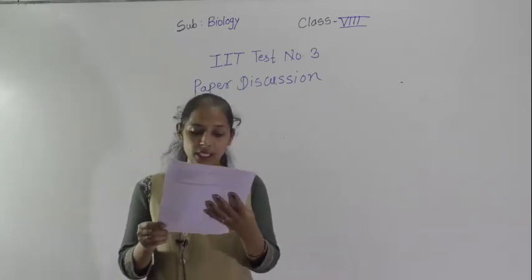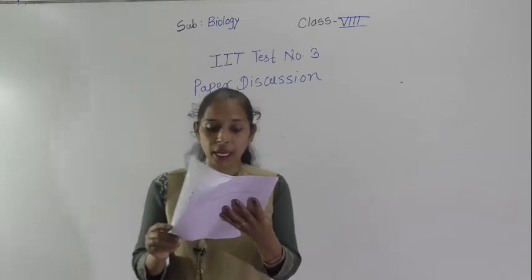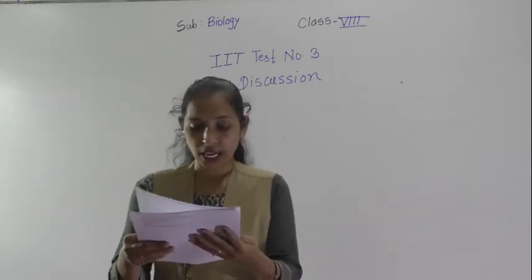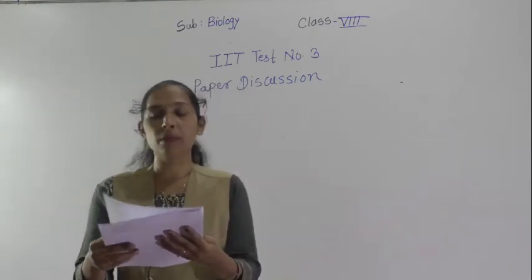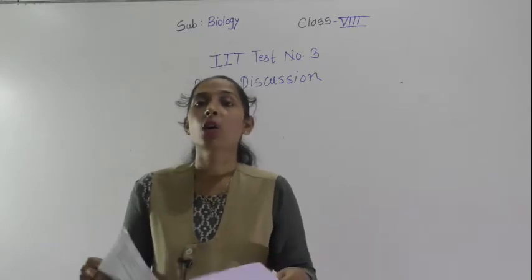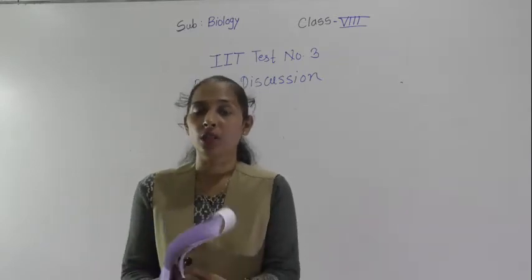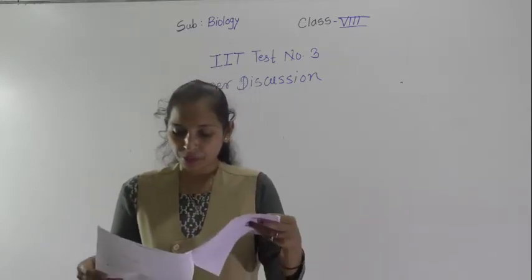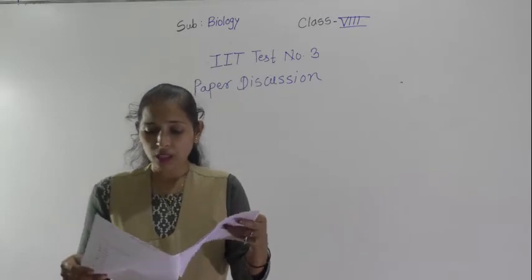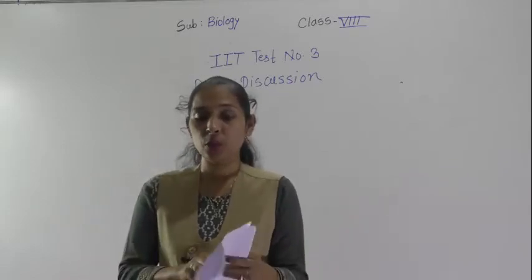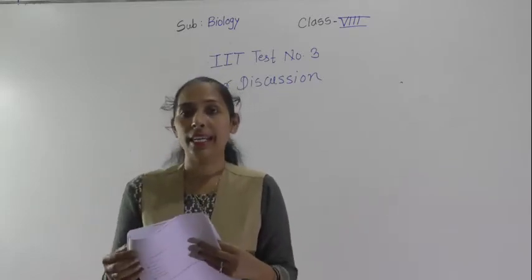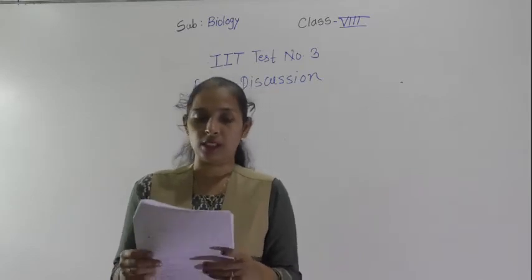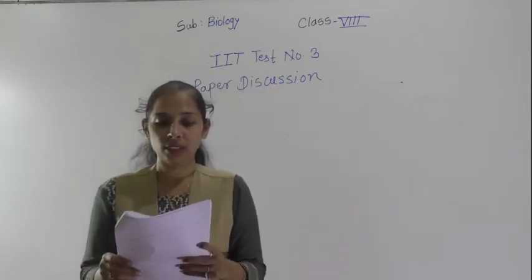Question number 4: the empty sac-like structure in the cytoplasm is called vacuoles. Vacuoles are the empty sac-like structures which help to collect many different types of substances.